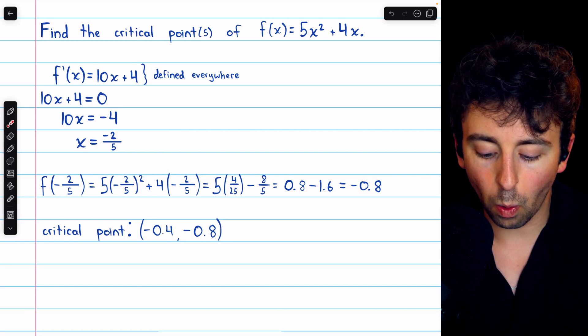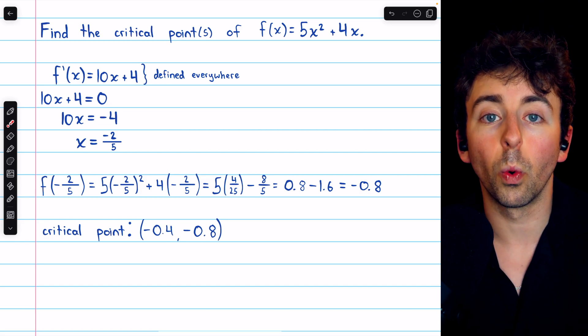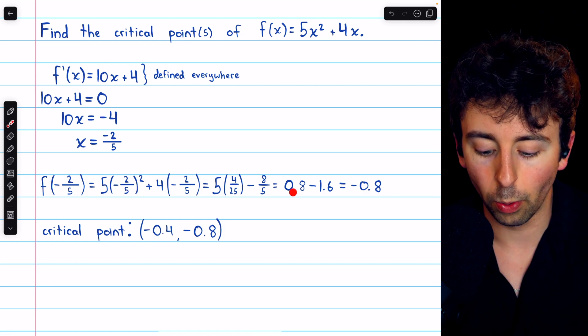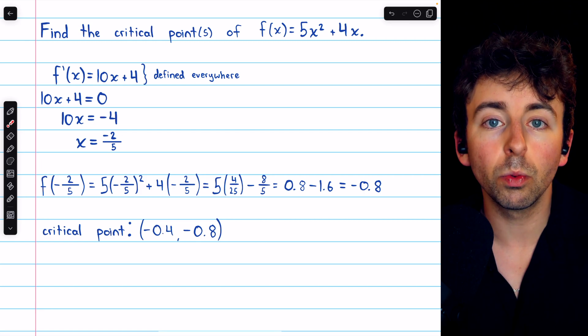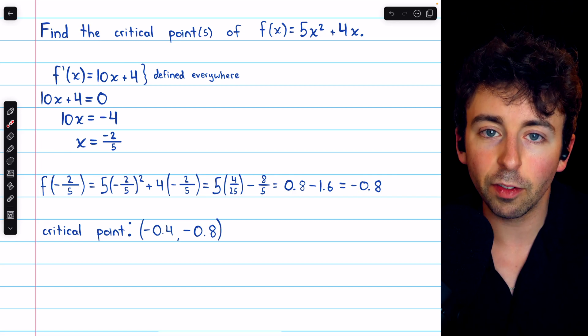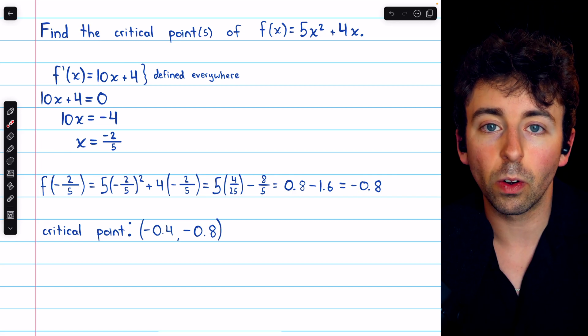(-2/5)² is positive 4 over 25, and 4 times (-2/5) is -8/5. 5 times 4/25 is 20/25, which is just 4/5, or 0.8. And 8/5 is 1.6, so this is minus 1.6. 0.8 minus 1.6 is negative 0.8, so that's the y coordinate.